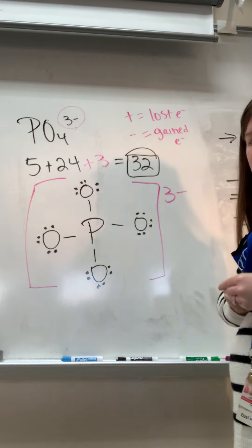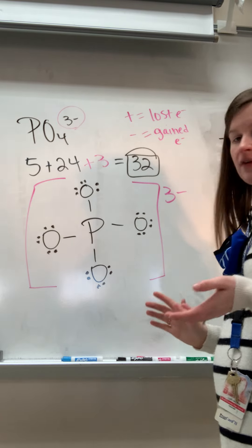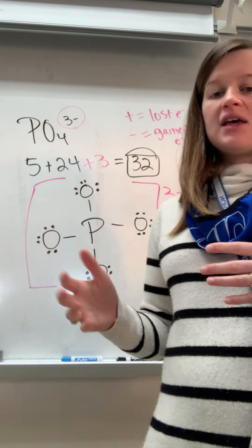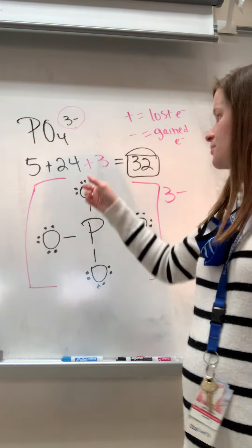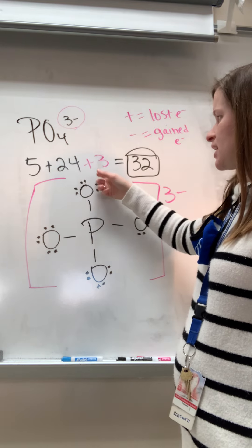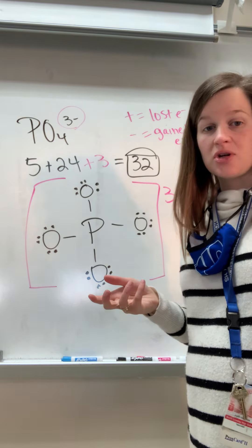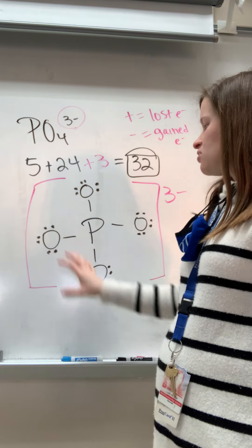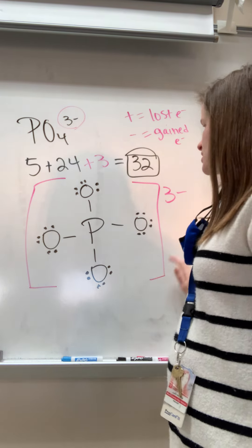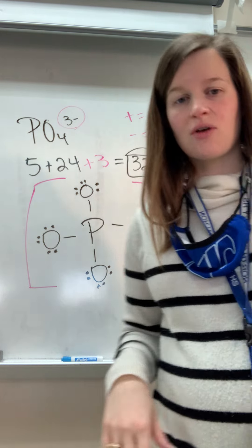So everything in black is normal covalent bond stuff and everything in pink is the extra steps. There's just two extra steps. You need to add your charge into your bucket or subtract your charge into your bucket depending on if it's positive or negative. And then after you finish your drawing, you're going to do brackets with the charge. Other than that, it's just like covalent.